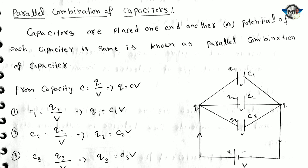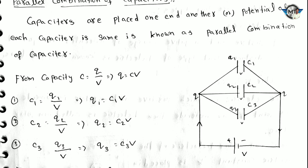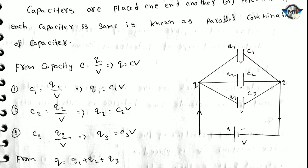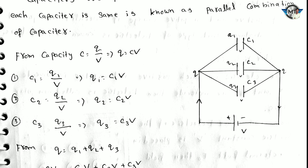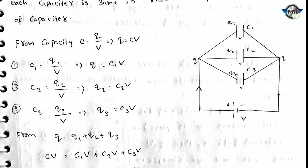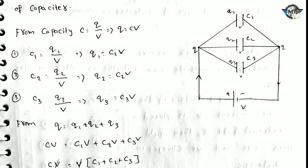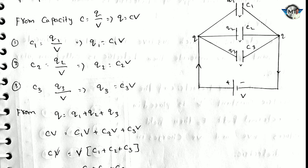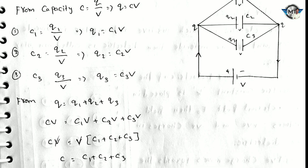In parallel combination of capacitors, capacitors are placed with one end connected together and the other end connected to the voltage source. Each capacitor has the same potential difference V. C equals Q by V, so charge Q equals CV. Therefore Q1 equals C1V, Q2 equals C2V, and Q3 equals C3V. The total charge Q equals Q1 plus Q2 plus Q3.